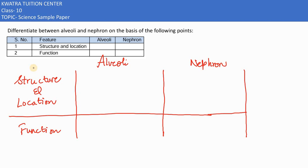Here in the next part we need to differentiate between alveoli and nephron. Nephron structure and location, you have to write.